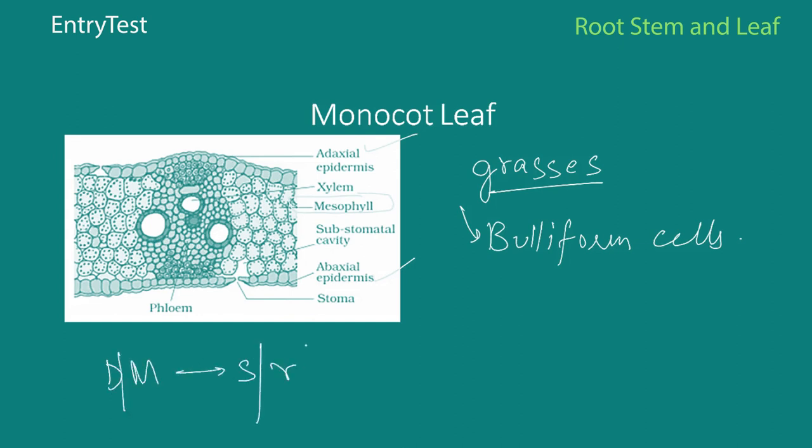So to summarize what we've covered in this video: the structure of dicots and monocots with respect to the stem, the root, and the leaf. Thank you so much for watching this video.